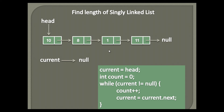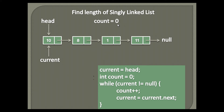Let's find the length of a linked list shown in the slide. Below is the algorithm for this. Let's execute the algorithm and see how it helps in finding the length of a linked list. The first step is to make the current node point to head. The second step is to create an integer variable count and initialize it to zero. The third step is to execute a few steps in a while loop. The while loop executes till the current node is equal to null, which means when the current node becomes null,